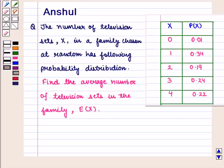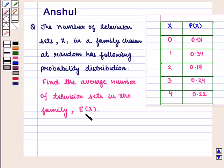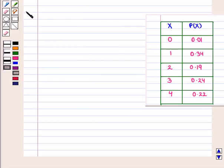Hello and welcome to the session. In this session we are going to discuss the following question: the number of television sets, denoted by capital X, in a family chosen at random has the following probability distribution. Find the average number of television sets in the family, i.e. the expected value of capital X.